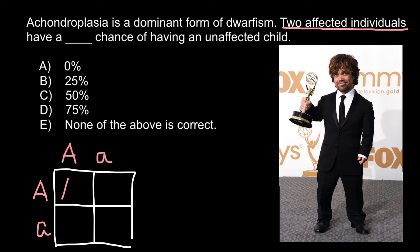When we build a Punnett square, we can see what genotypes and phenotypes the progeny would have. The results are: capital A capital A, capital A small a, capital A small a, and small a small a.